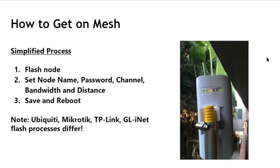Here's a simplified getting-started process: flash the node, set the node name, password, channel, bandwidth, and distance. Save it, reboot, and point it toward another flashed node on the same channel and bandwidth. That's it — and you can connect. We highly recommend doing a flash mob: getting people into a room and flashing together with two or three people who've done it before. That cuts down on the frustration level dramatically.